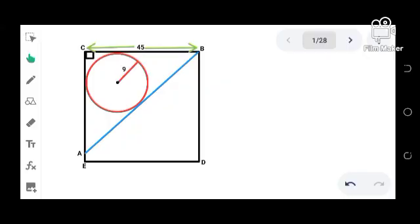Good day everyone, let's try to solve this geometry problem. We are given quadrilateral BDEC with a circle of radius 9 units inside it. The measure of side BC is 45, and from point B a segment is drawn going to side CE at point A, and this segment is tangent to the circle.